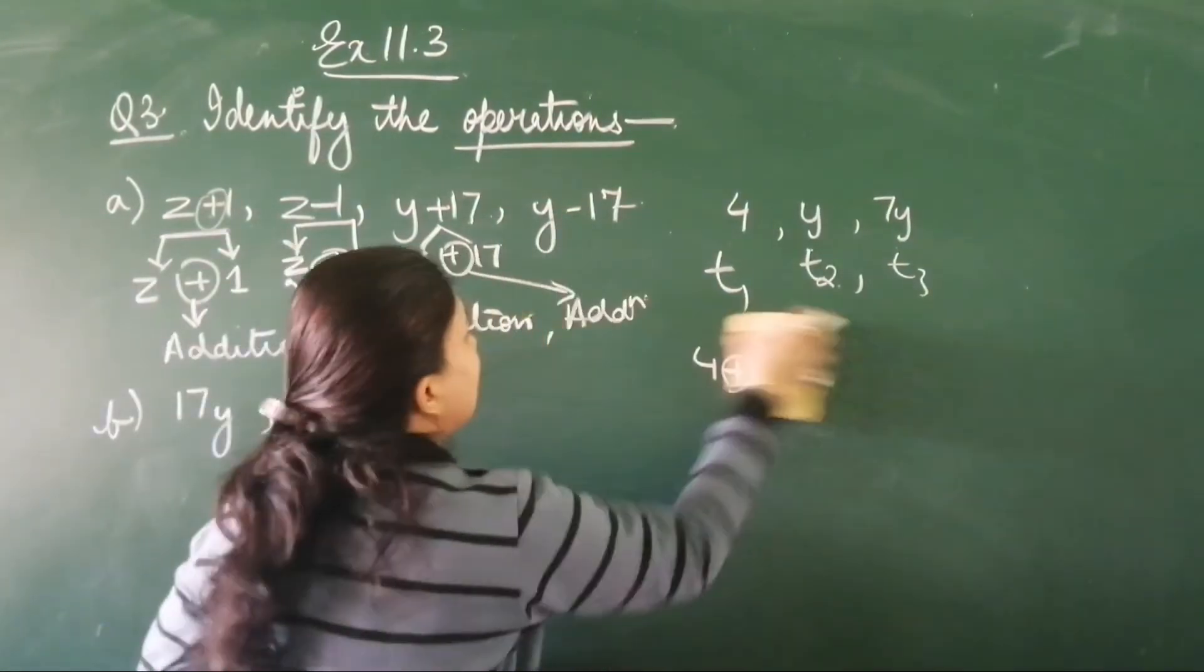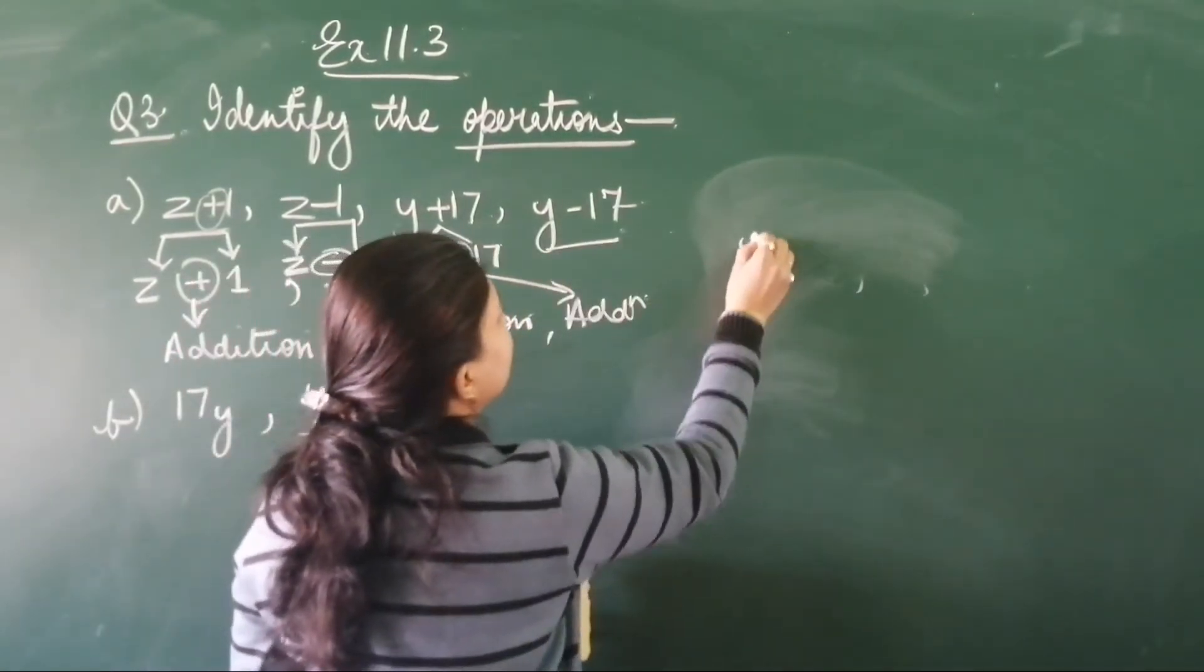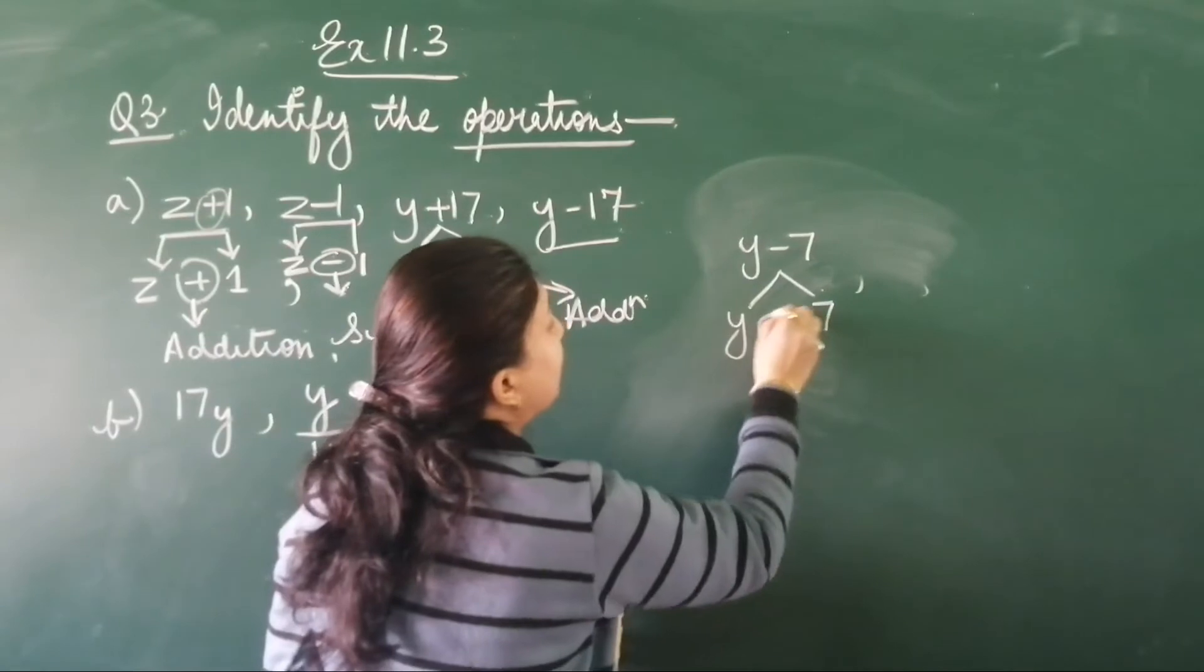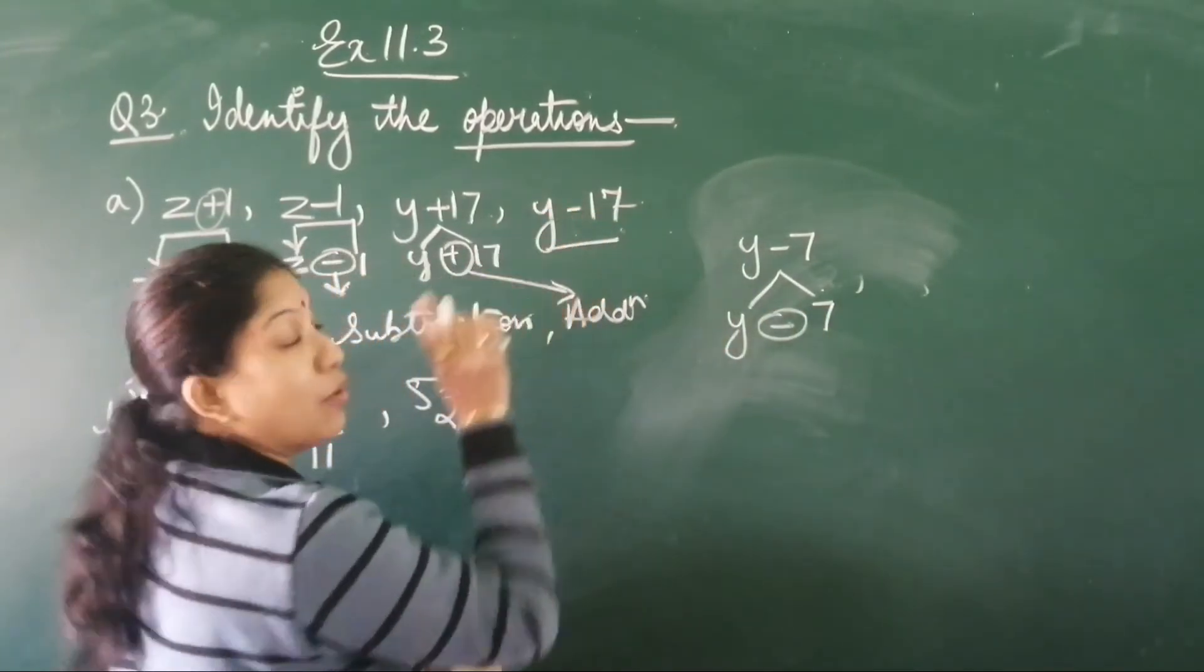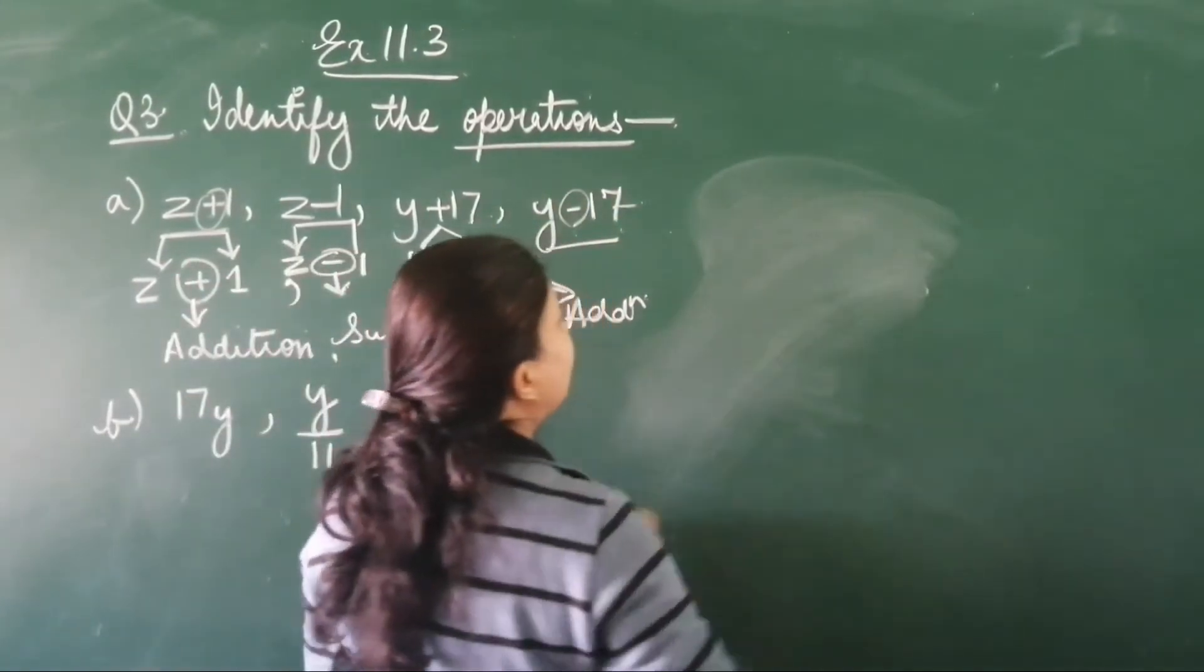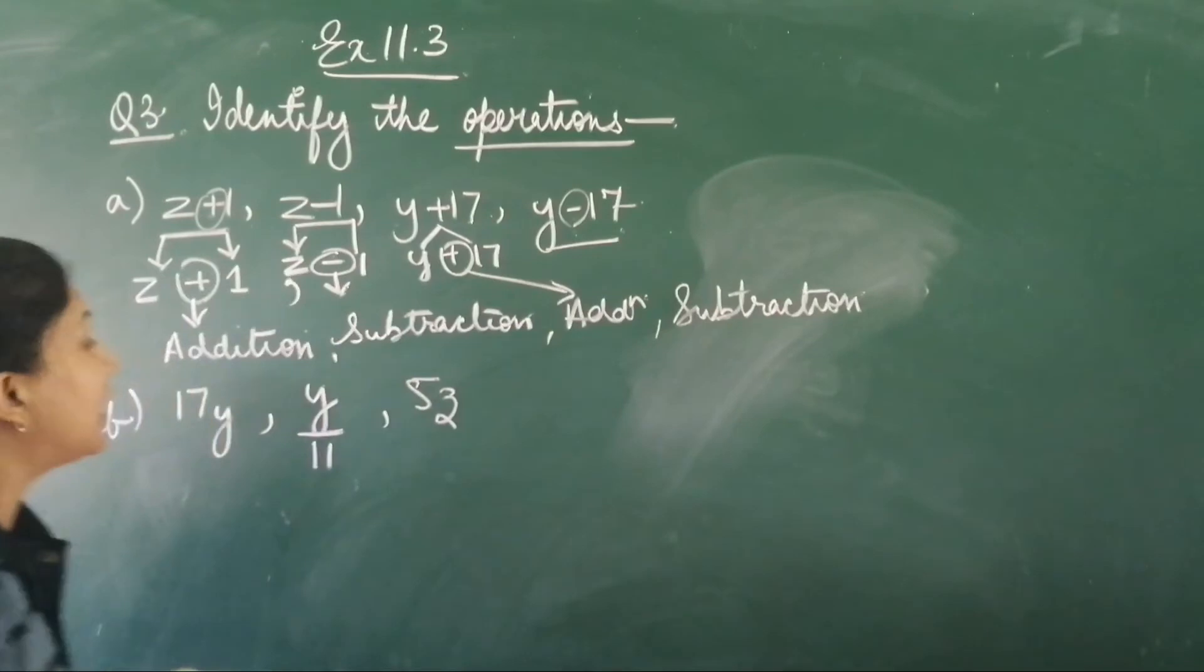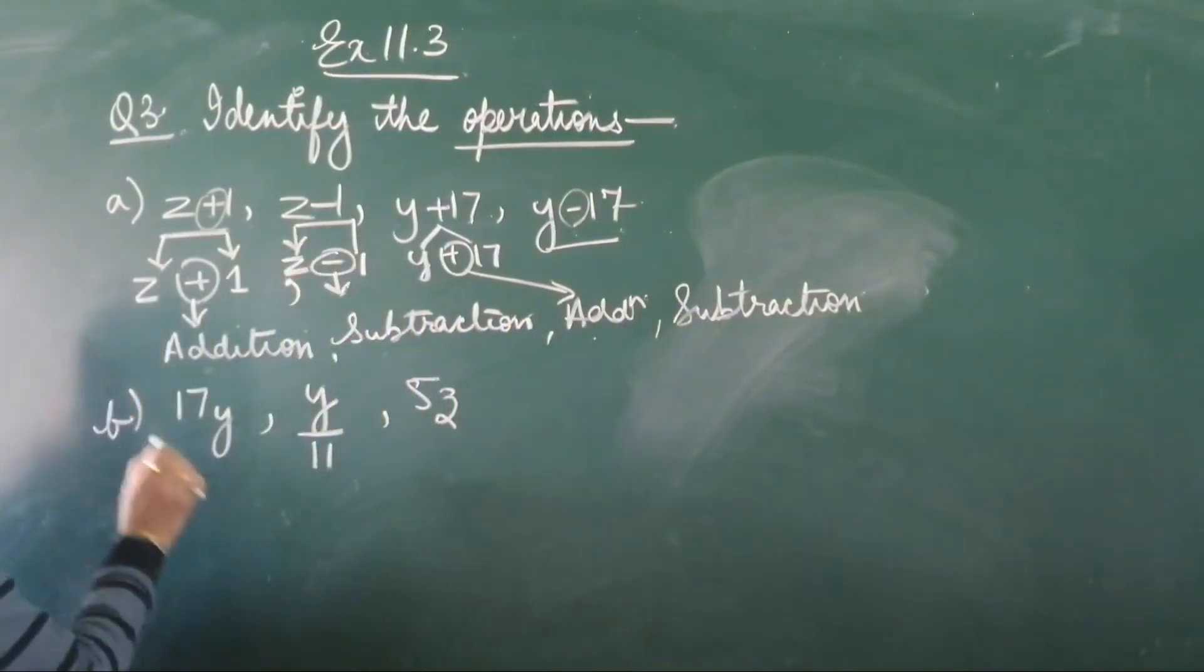Now, same way, look at the last term. I will write down here: y minus 17. Which two terms are here? y and 17. And in between, which operator they have? Minus. Why is this sign used? See, operator is subtraction, symbol is minus. With minus sign, what we do? We do the subtraction. So this is your answer. Four operators we have here: addition, subtraction, addition, and subtraction.